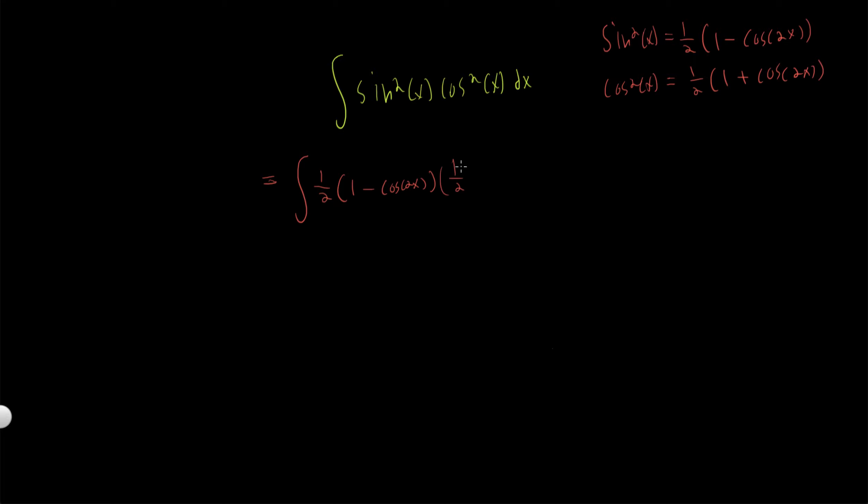I can rewrite this as the integral of one-fourth, because the one-half and the one-half, times one minus cosine 2x times one plus cosine 2x. That's just one minus cosine squared of 2x, using the difference of two squares formula, dx.